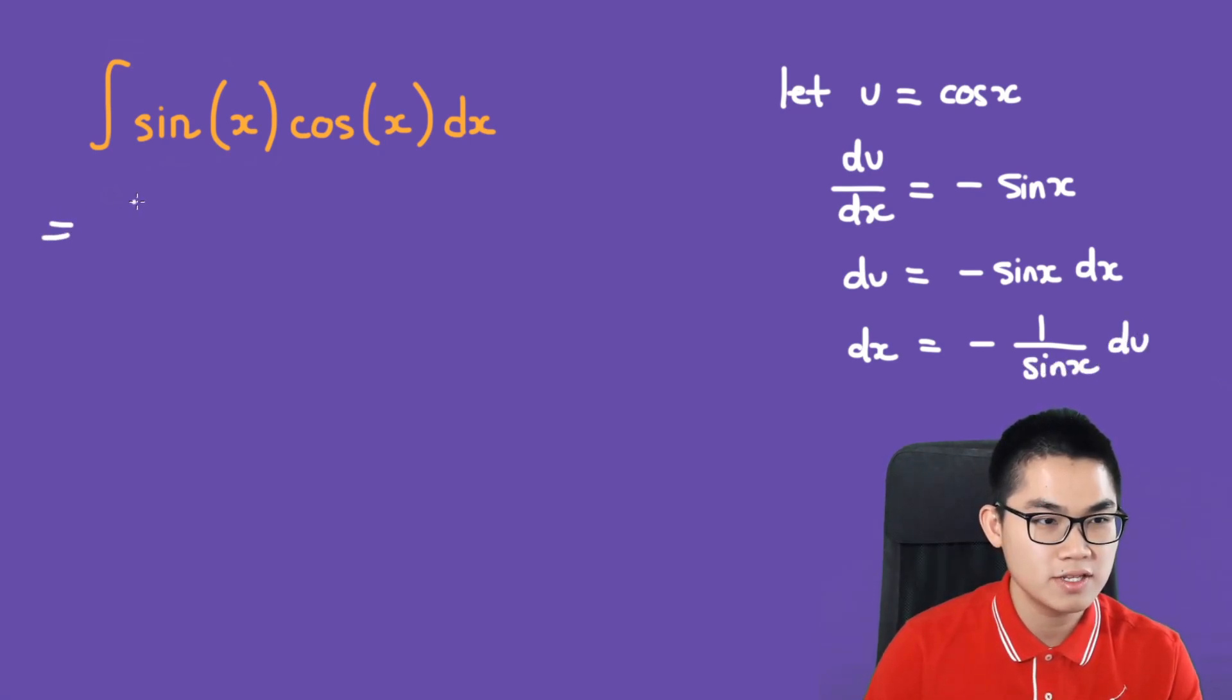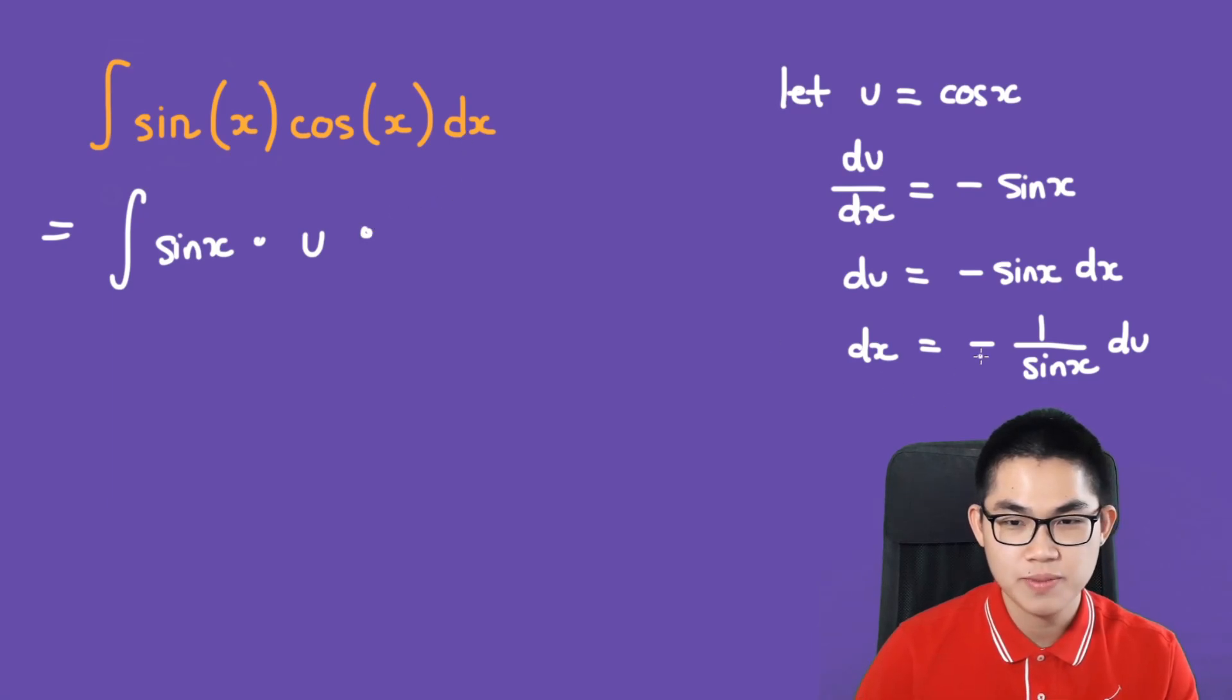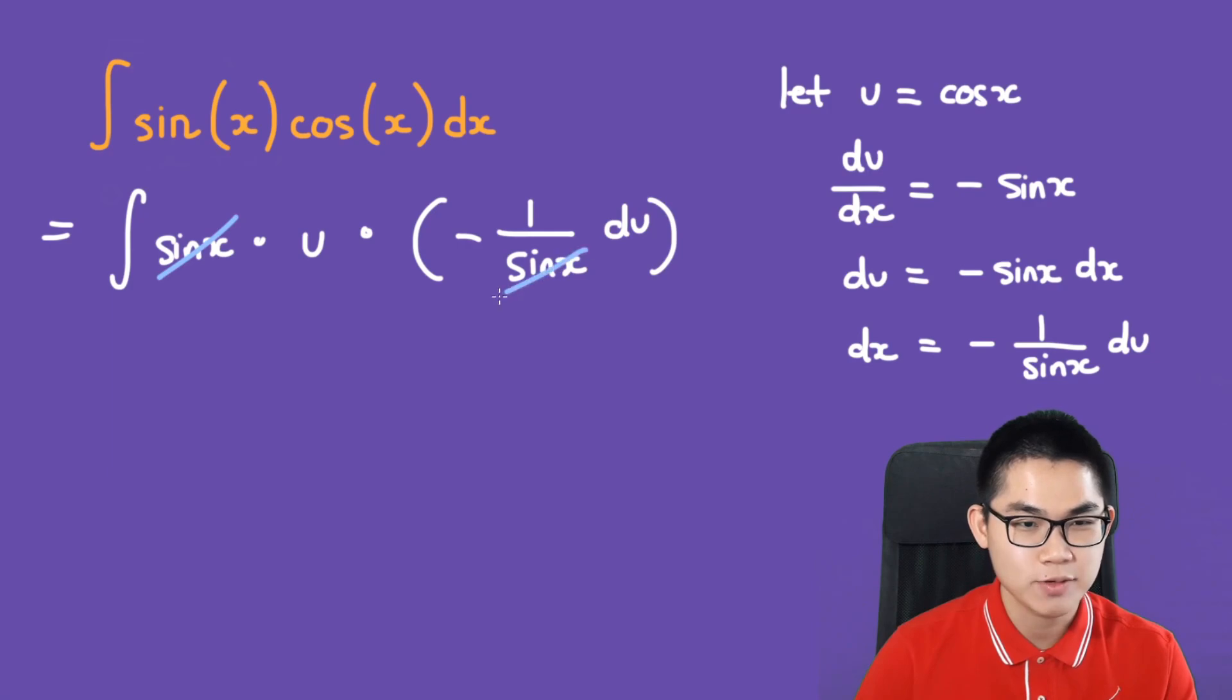So we put it into this integral. We have sine of x times cosine of x, which we already let to be u. Then dx is going to be negative 1 over sine of x du, so times negative 1 over sine of x du. So the sine here will cancel out.